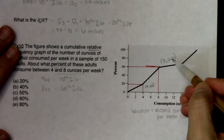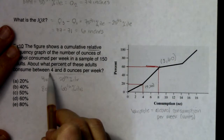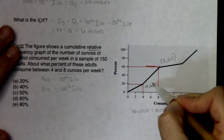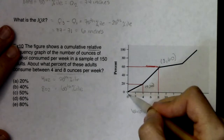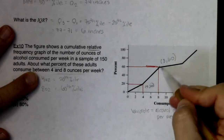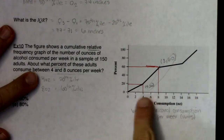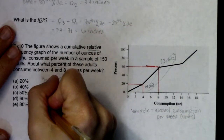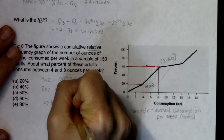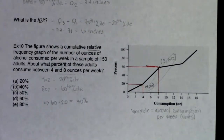Now, what percent consumed between four and eight ounces? You can see the accumulation here: if 20 percent were consuming four ounces or less, and 60 percent were consuming eight or fewer ounces, then subtracting those two percentages — 60 minus 20 — gives the chunk of people in between. That's the answer: 40 percent.